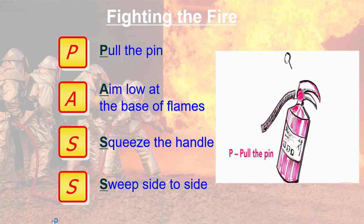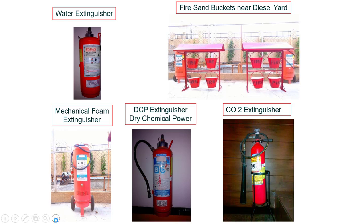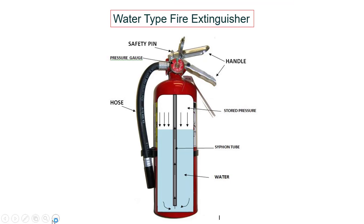Here you can see the various types of fire extinguisher. Mainly, the water tub fire extinguisher for solid fire. Then sand — fire sand packet, mainly near the diesel yard we can see this fire sand packet where the sand is filled inside. Then mechanical foam extinguisher, DCP extinguisher, dry powder, and CO2 extinguisher. These are the extinguishers commonly used in the hospitality industry.